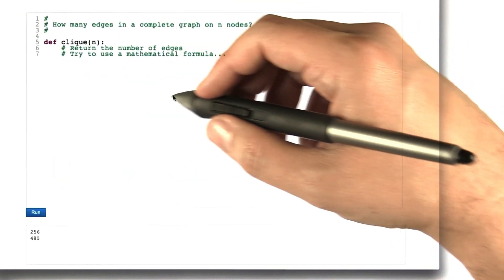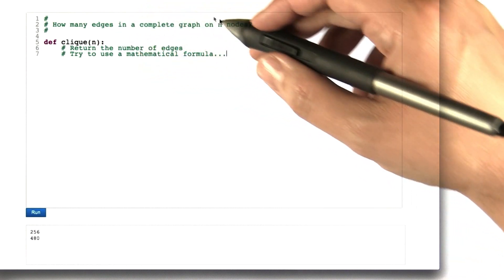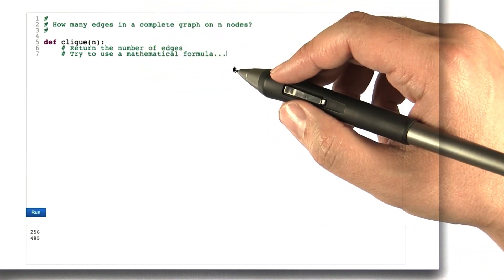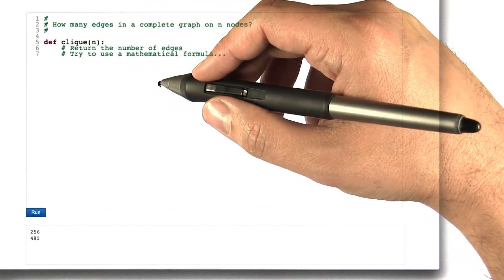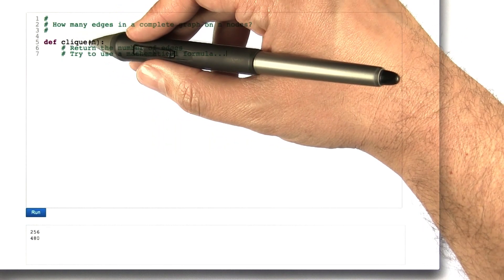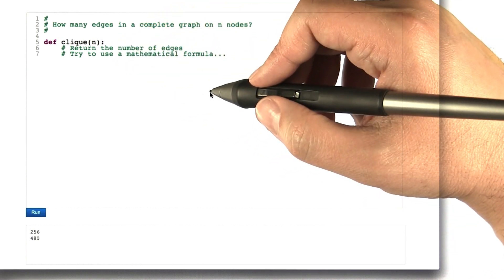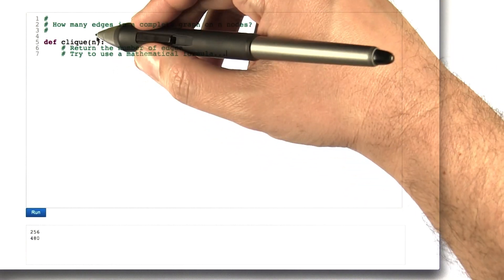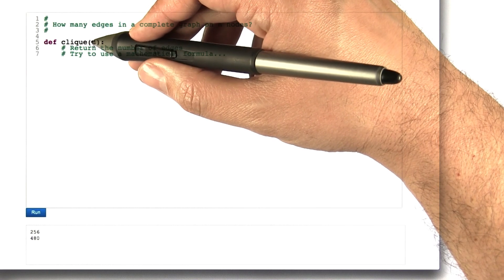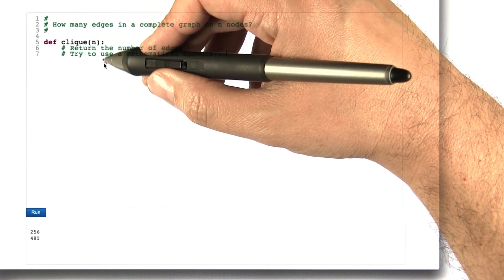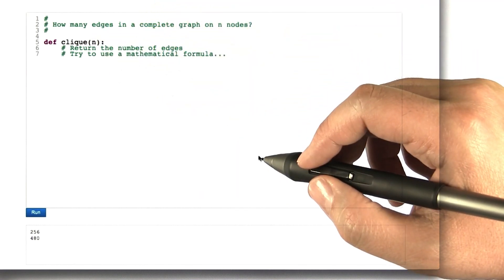So in this question, I'd like you to actually work out the number of edges in a complete graph on n nodes. And the way you should submit this to us is by writing a function in Python that's called clique. And it is given one value n, which is going to be an integer greater than 0. And it should calculate from that the number of edges that will be created if you fully connect all those nodes. And then just return that answer back so that we can grade it.